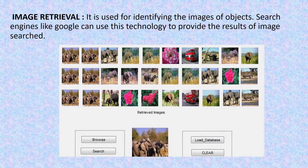Another example is image retrieval. It is used for identifying the image of objects. Search engines like Google can use this technology to provide the results of an image search. If you want to know anything about a particular image, you upload the pic in the search engine and the search engine will analyze the content of the image — maybe its color, shape or any other information that can be derived from the image itself — and identify the image or provide the search result.